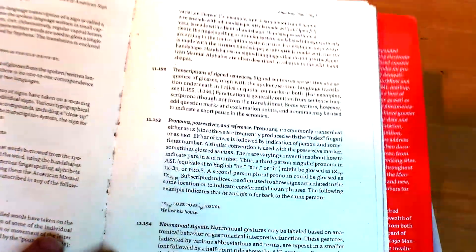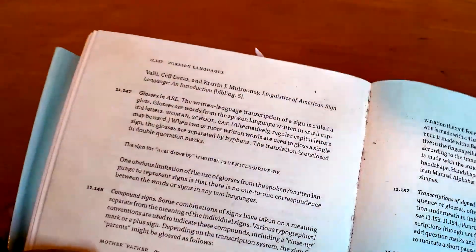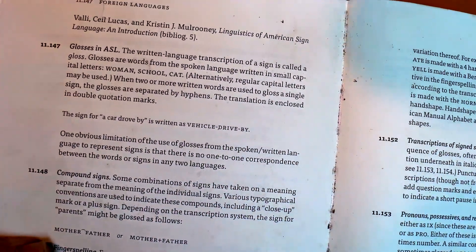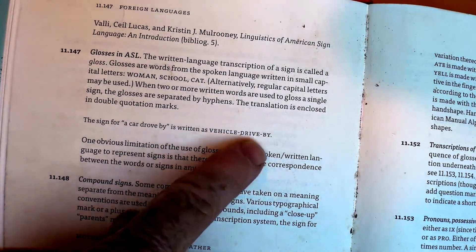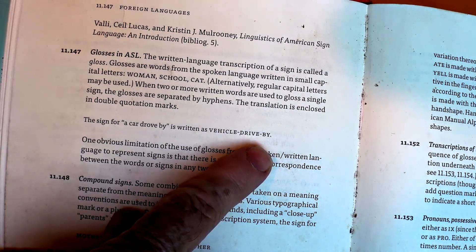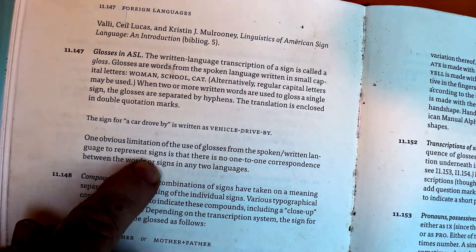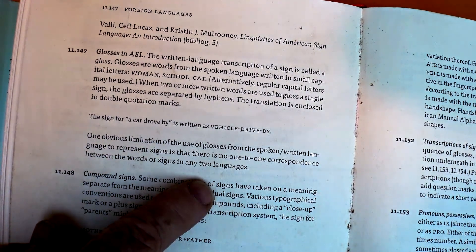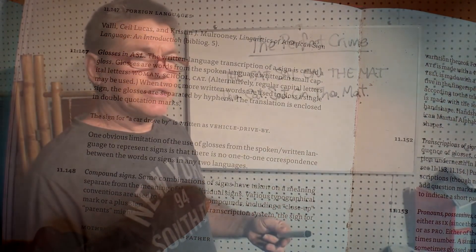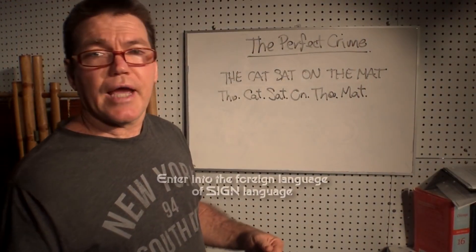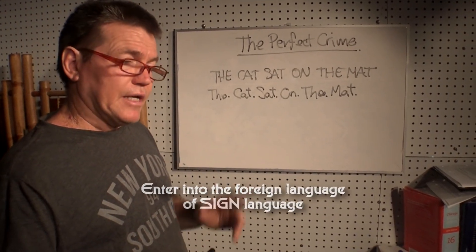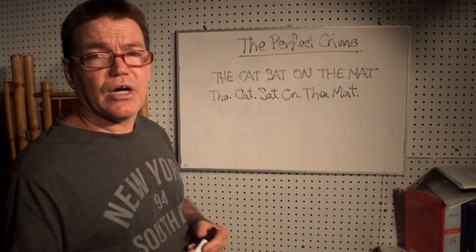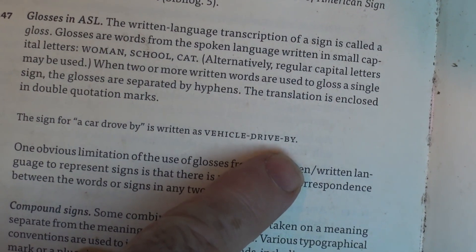In article 11.147 of the Chicago Manual of Styles, it identifies this all-uppercase text as American Sign Language, or ASL. And when you enter into a contract, you have to sign yourself into it — sign the document. That's a sign. Sign language. So when you enter into that signed document, you have to sign your name.